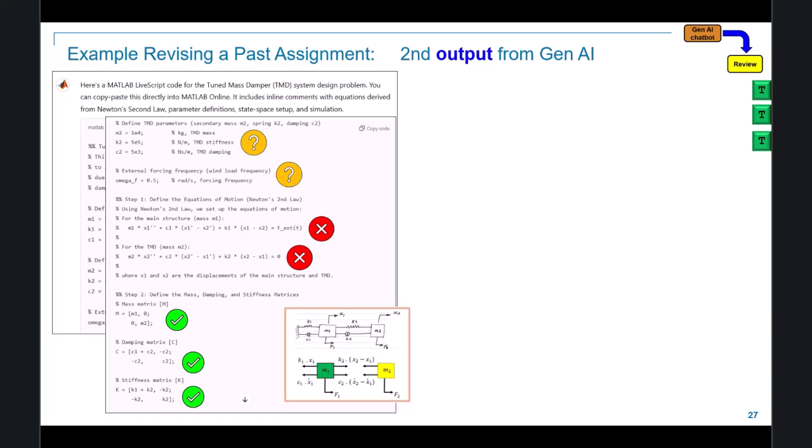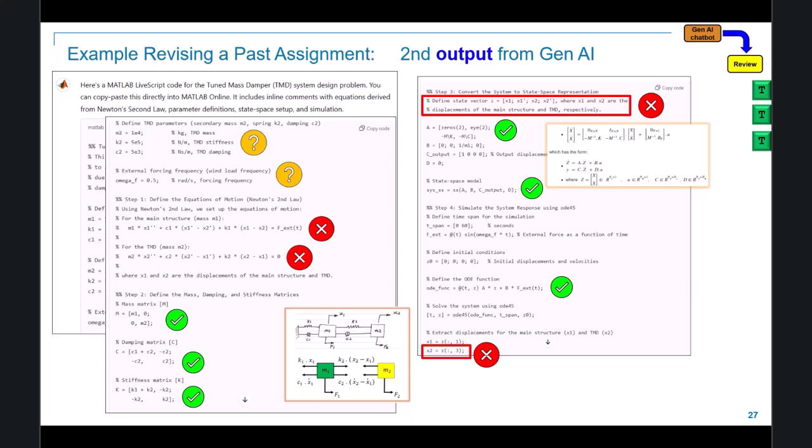As we scroll further down the automatically produced code, we see straight up rubbish. The Newtonian equations of motion that are in this comment block are just wrong. Which is really strange because the mass, damping, and stiffness matrices defined by the MATLAB expressions are actually correct. Scrolling further down the generated code, we again find errors in the commentary. Here, the ordering of the state vector in state space form is just wrong. But again, the MATLAB code implementation is correct.